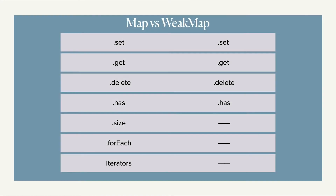You cannot iterate WeakMap items. That's why you don't have iterators or a forEach method, as well as the size property — and it's all because the keys in the WeakMap are weakly held. That means if you set a key and nothing else is using that key, it will be thrown away, aka garbage collected, where Maps will keep everything even if you don't use it. WeakMaps only hold a reference to the key, not the key itself. So if no object, no reference.